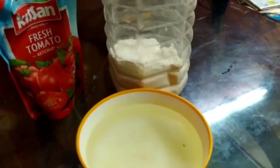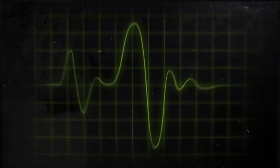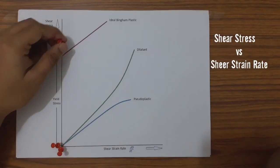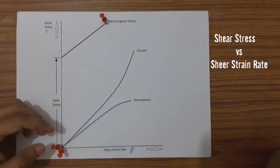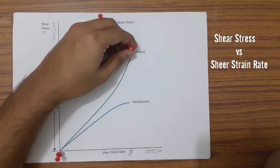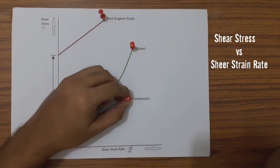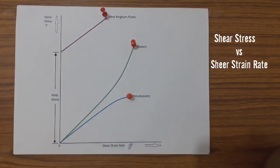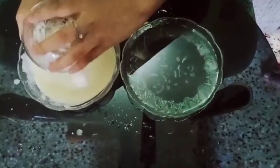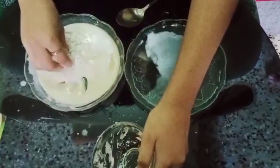In this graphical representation, Bingham plastic requires a finite yield stress before it begins to flow. In dilatant fluid, viscosity increases as stress is applied. And in the case of pseudo plastic fluids, viscosity decreases with increase in shear rate.